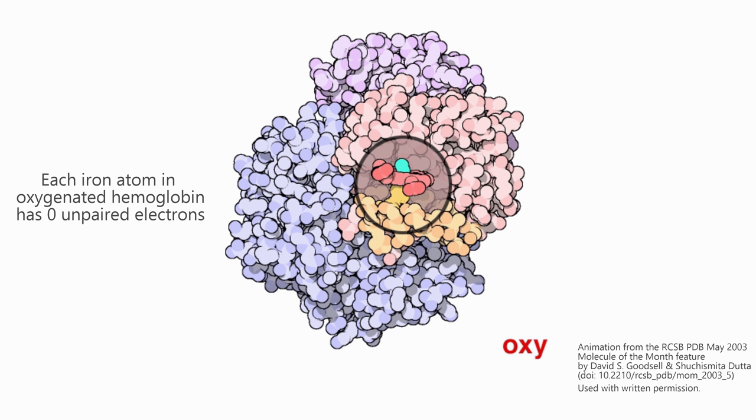This gives oxygenated hemoglobin a diamagnetic reaction. It is repelled by a magnet, despite the iron content.